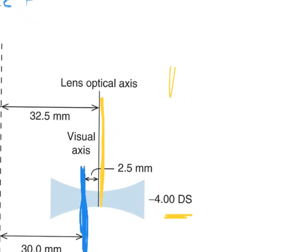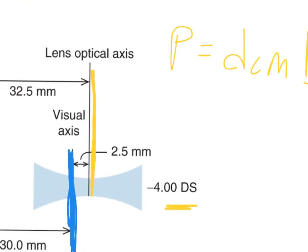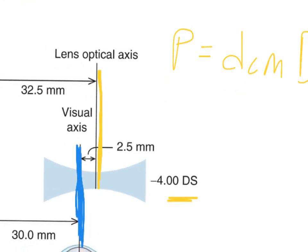So P equals d centimeters times big D. The d centimeters is the distance between the optical axis and where the patient is looking through. So in this case, this distance is 2.5 millimeters.